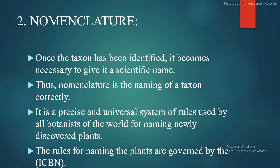Second is nomenclature. Once a taxon has been identified, it becomes necessary to give it a scientific name. Nomenclature is the naming of a taxon correctly. It is a precise and universal system of rules used by all botanists of the world for naming newly discovered plants. The rules for naming plants are governed by the ICBN — the International Code of Botanical Nomenclature.